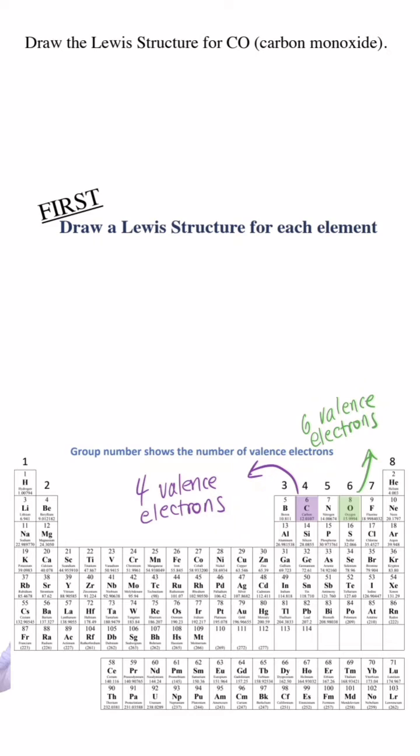When I draw Lewis structures for molecules, I start by first drawing the Lewis structure for each atom, spacing the electrons out evenly on the four sides before pairing them up.